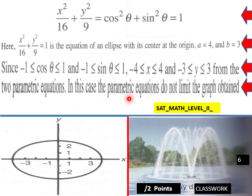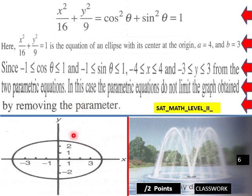In this case, the parametric equations do not limit the graph obtained by removing the parameter. So we end up with an ellipse from that one.